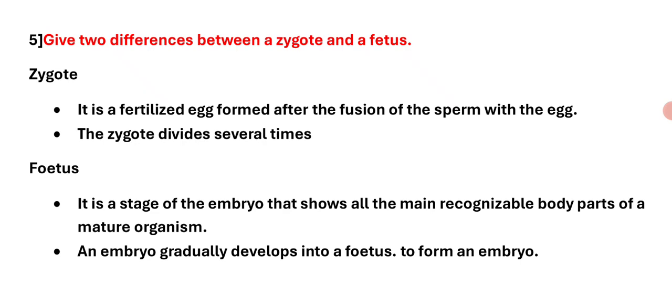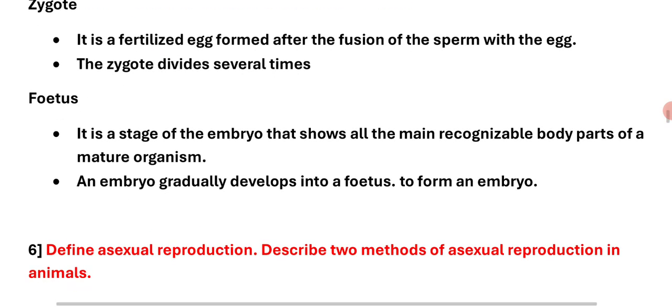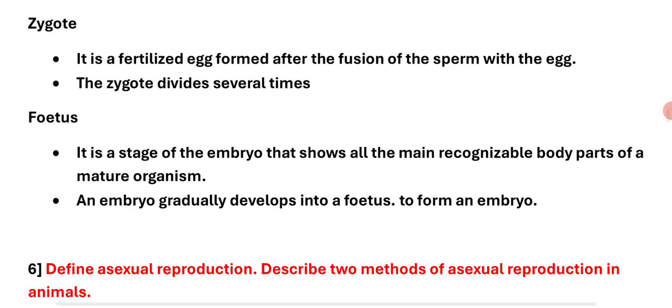Question 5: Differences between a zygote and a fetus. Zygote: it is a fertilized egg formed after the fusion of a sperm with the egg. The zygote divides several times. Fetus: it is a stage of the embryo that shows all the main recognizable body parts of a mature organism. An embryo gradually develops into a fetus.